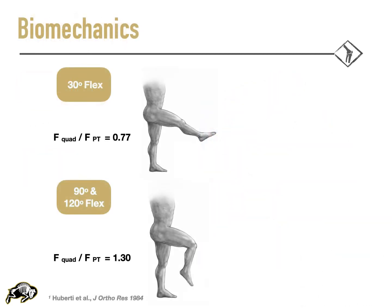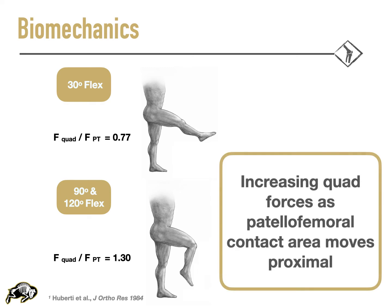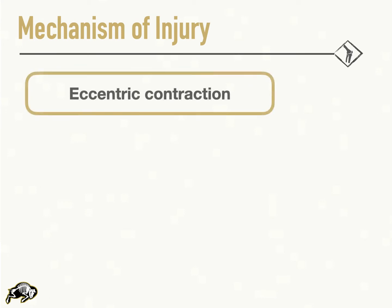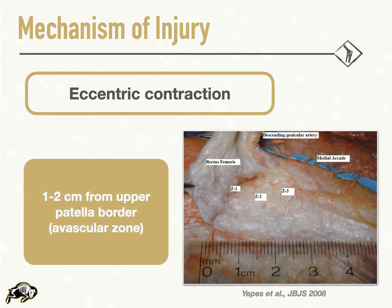Looking at some biomechanics, Huberti and colleagues were among the first to investigate force relationships of the extensor mechanism and found that forces in the quad tendon and patellar tendons respectively change with range of motion. They noted that increasing forces were common in the quad tendon as the contact area of the patella moved more proximal on the femur — or in simpler terms, the forces in the quad tendon increase with more knee flexion. Forces are reportedly highest in the quad tendon during eccentric contraction, which is when most of these injuries occur, typically in the avascular zone of the tendon — zone two — approximately one to two centimeters proximal to the upper patella border.